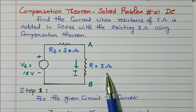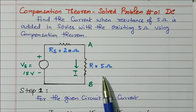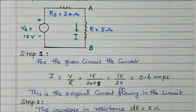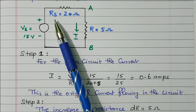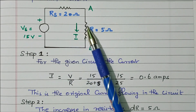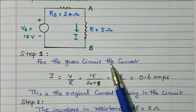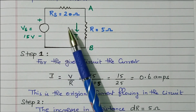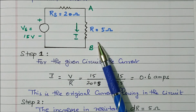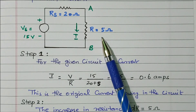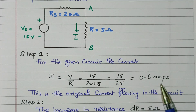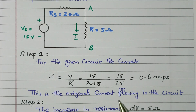While increasing the resistor, there is an opposing voltage called Vc — the compensation voltage. First we find the current flowing through the original circuit. This is a simplified circuit with only one voltage source and two resistors connected in series. The current I = V/R = 15 / (20 + 5) = 15/25 = 0.6 ampere. This is the original current flowing in the circuit.